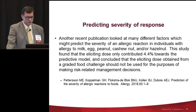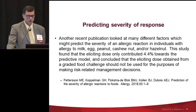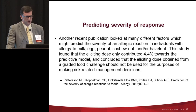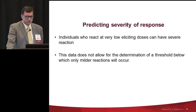A recent publication by Peterson looked at factors predicting severity of allergic response in individuals with allergy to milk, egg, peanut, cashew, or hazelnut. They found that eliciting dose contributed only 4.4 percent toward the predictive model — not a strong predictor of reaction severity. They concluded that the eliciting dose from a graded food challenge should not be used for risk-related management decisions, and this data does not allow for the determination of a threshold below which only milder reactions will occur.